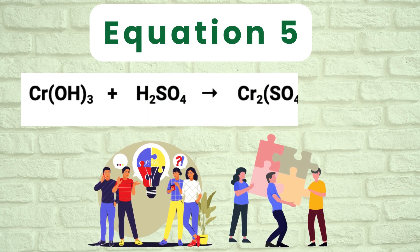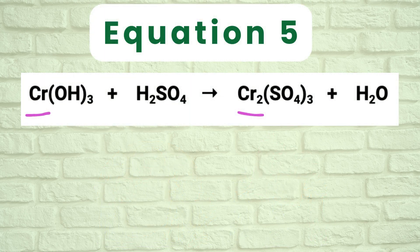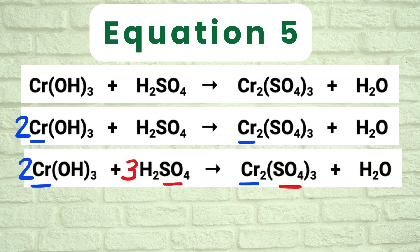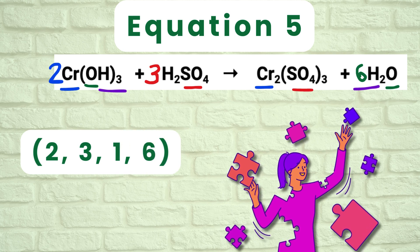Equation 5: Cr(OH)3 plus H2SO4 gives Cr2(SO4)3 plus H2O. Balance chromium first by putting a coefficient of 2 in front of Cr(OH)3, so chromium is 2 on both sides. Next balance the polyatomic ion SO4 by putting a coefficient of 3 in front of H2SO4, so SO4 is 3 on both sides. Hydrogen on the left is 2 times 3 equals 6, plus 3 times 2 equals 6, for a total of 12. Put a coefficient of 6 in front of H2O. Oxygen is now 6 on both sides. The equation is balanced; coefficients are 2, 3, 1, 6.